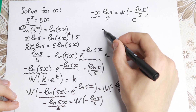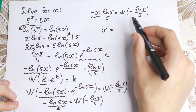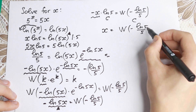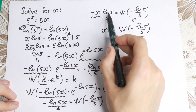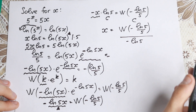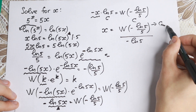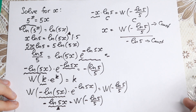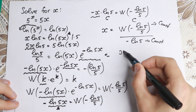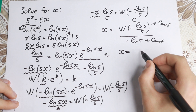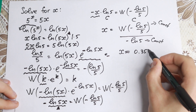So the final answer: x equals Lambert W of (minus ln 5 over 5) divided by minus ln 5. This is our answer, because everything here is a constant. If you evaluate this expression in Wolfram Alpha or using Lambert W function values, you get x approximately equal to 0.353.